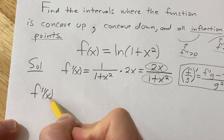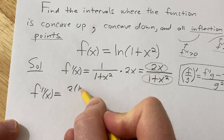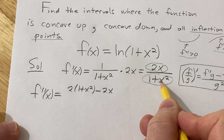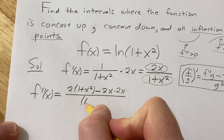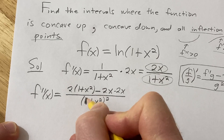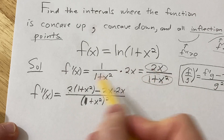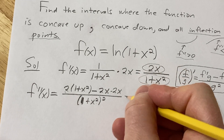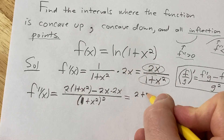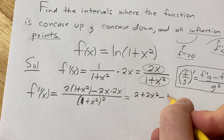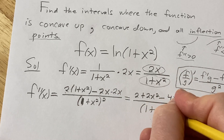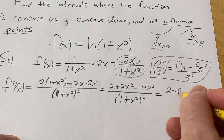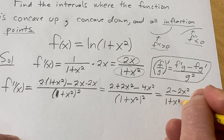So f double prime of x: the derivative of the top times the bottom, minus the top times the derivative of the bottom — the derivative of 1 is 0, the derivative of x squared is 2x — all over the bottom squared. That's just 2 times the bottom, minus the top times the derivative of the bottom, over the bottom squared. This simplifies to 2 plus 2x squared minus 4x squared over 1 plus x squared squared, which equals 2 minus 2x squared over 1 plus x squared squared.